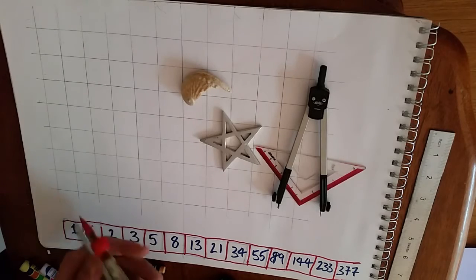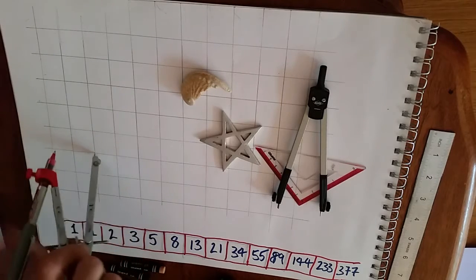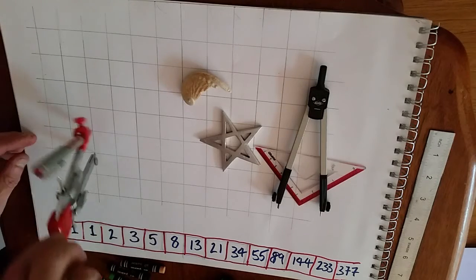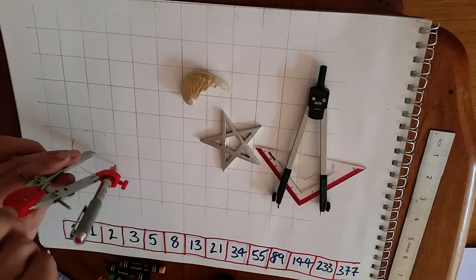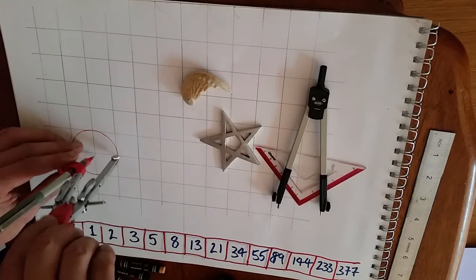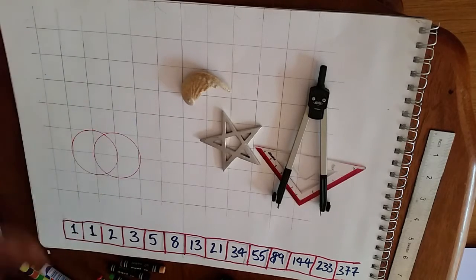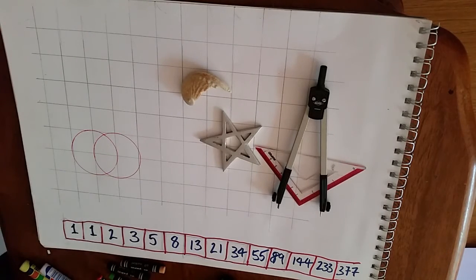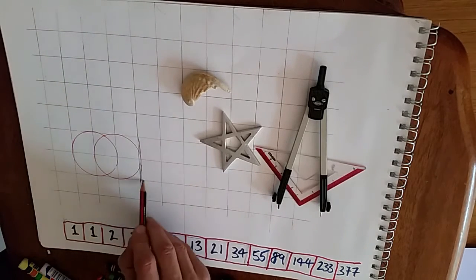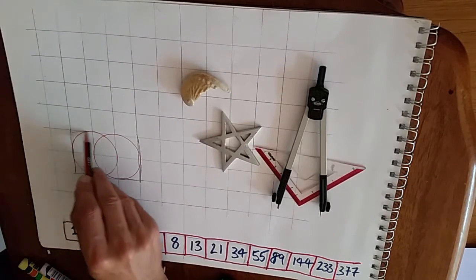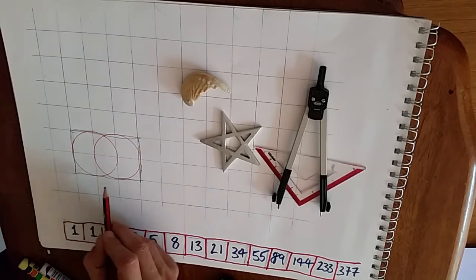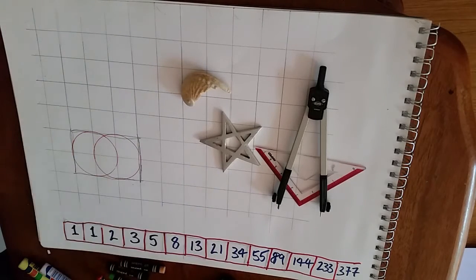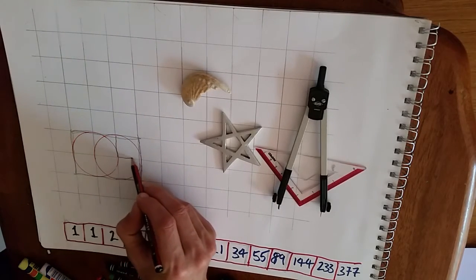I'm going to set the compass to the edge length of the square. The Vesica is enclosed by a rectangle of one, two, three by one, two high, and starting with this square here.